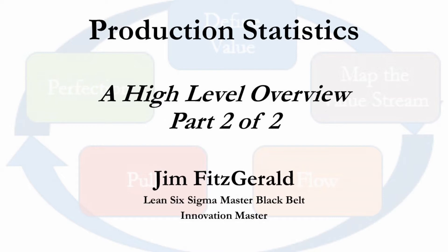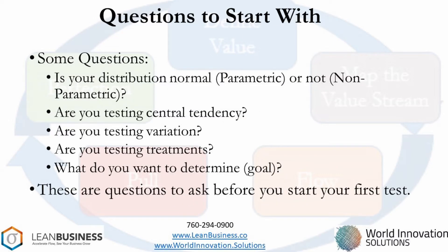Part two continues on with some parametric statistics that require a normal distribution, but then also includes some non-parametric statistics for distributions that are either not normally distributed or unknown. I include this slide just to let the presentation stand on its own; however, for a discussion on this, view part one of this presentation.